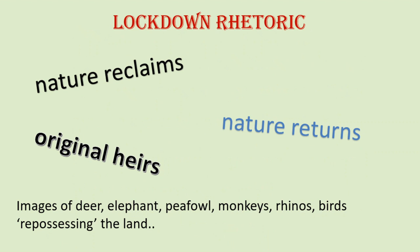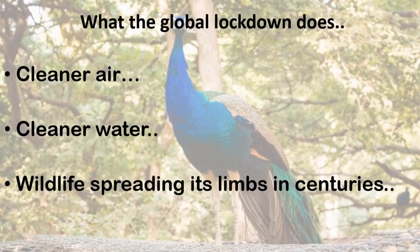Coming to the lockdown — in newspapers there is this lockdown rhetoric where we talk about nature reclaiming, the original air returning, and we have images of deer, elephant, peacock, monkeys, rhinos, birds coming back into the streets. It all looks very lovely. What has the global lockdown done? It has given us cleaner air — pollution levels in many cities including Delhi have come down rapidly, drastically, unbelievably. Even the Ganges river has become clear so that fish can be seen. Wildlife is spreading its limbs for the first time in centuries, and parks near the woods have a breathing space after so long.